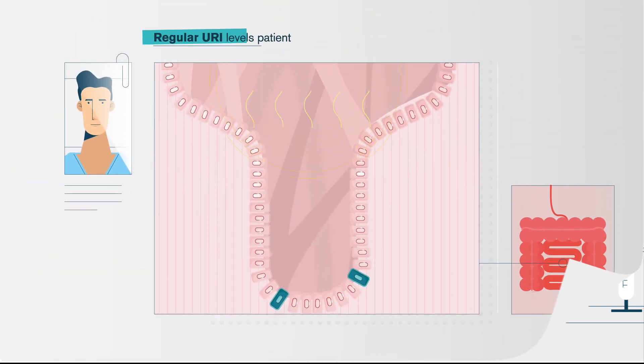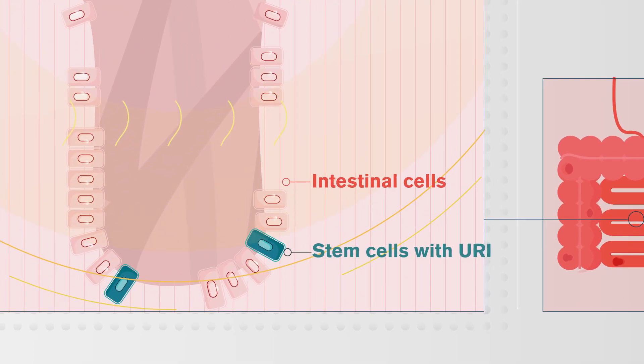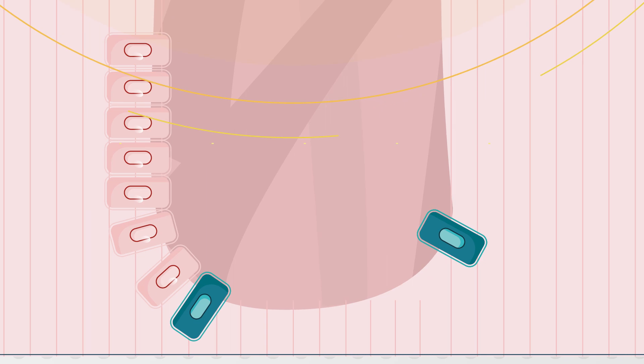Under normal conditions, the stem cells that express URI are dormant and do not divide. For this reason, they survive and make up a cell pool capable of regenerating the intestine after the intensive and repetitive radiation.